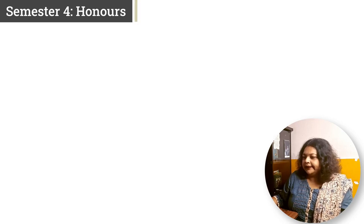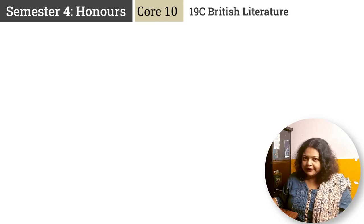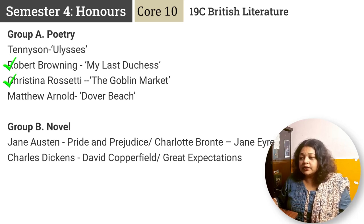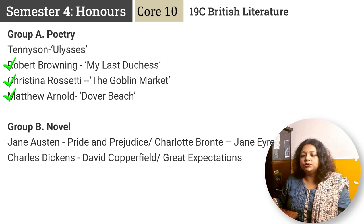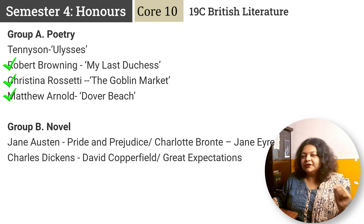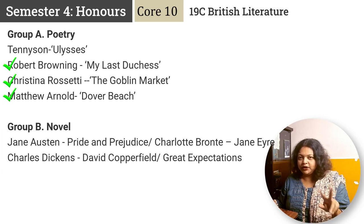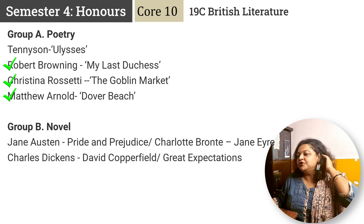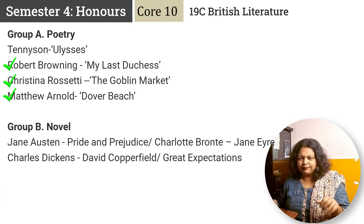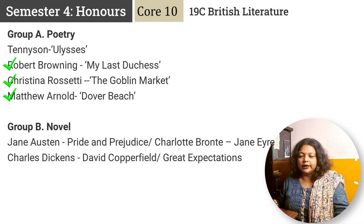Core 10 is 19th century British literature — Victorian times. Group A poetry: Tennyson's Ulysses, Robert Browning's My Last Duchess, Christina Rossetti's The Goblin Market, and Matthew Arnold's Dover Beach — four poems. Group B novel: either Jane Austen's Pride and Prejudice or Charlotte Brontë's Jane Eyre, and either Charles Dickens' David Copperfield or Great Expectations — your college will decide or you can make your own choice.